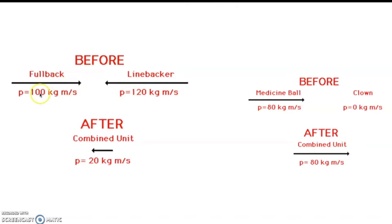So let's see here. Fullback and linebacker. Positive 100. Negative 120. We add 100 to negative 120, we get negative 20. So when they combine and the linebacker tackles the fullback, you can see that the momentum is 20 in the negative direction.